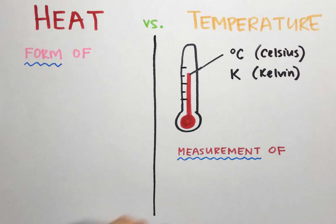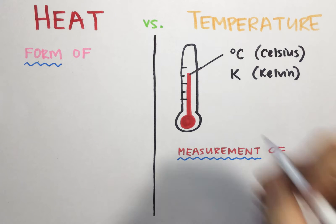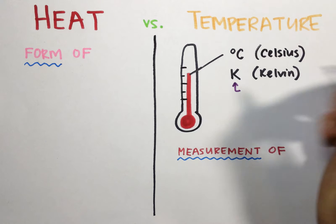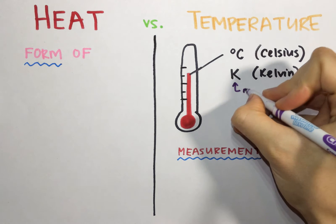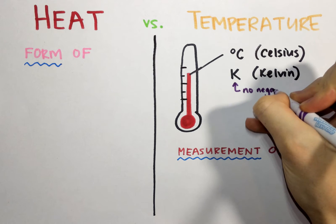These two are both perfectly legitimate temperature scales to use in chemistry. Sometimes one will be more useful than the other. Oftentimes we report things in Celsius simply because that's the scale that most of the world uses. For some purposes, particularly in this unit, Kelvin is going to be particularly useful because Kelvin is an absolute scale. That means it starts at zero and has no negative values.